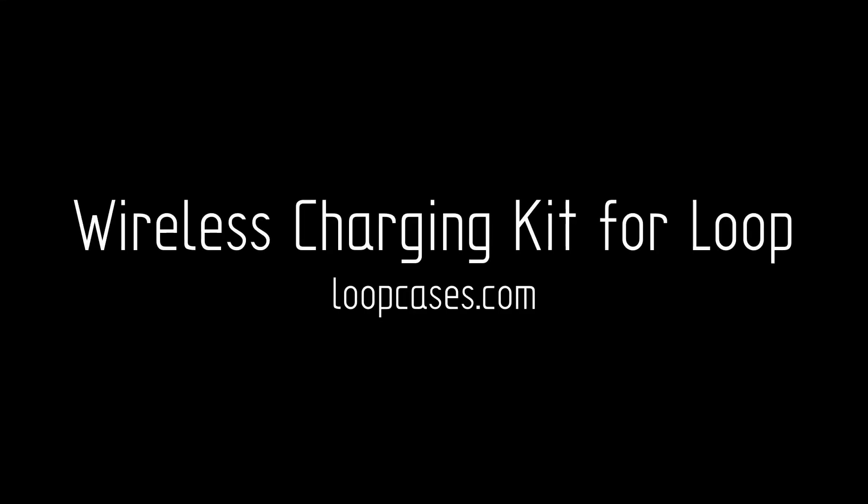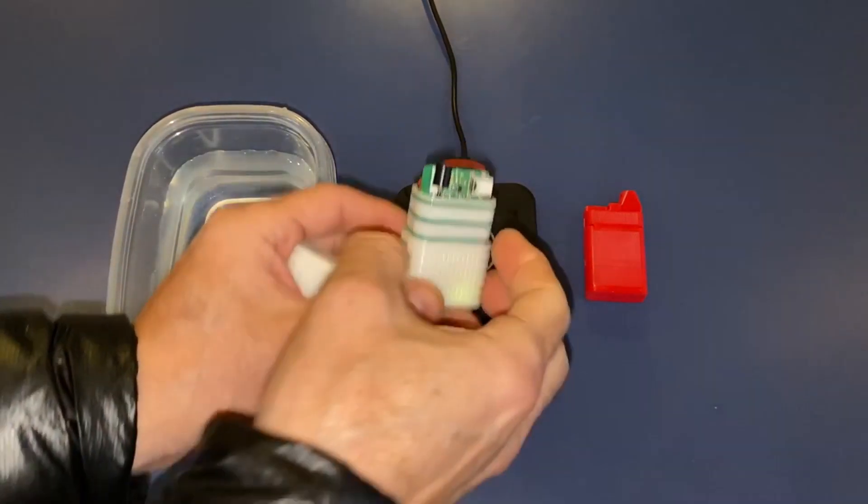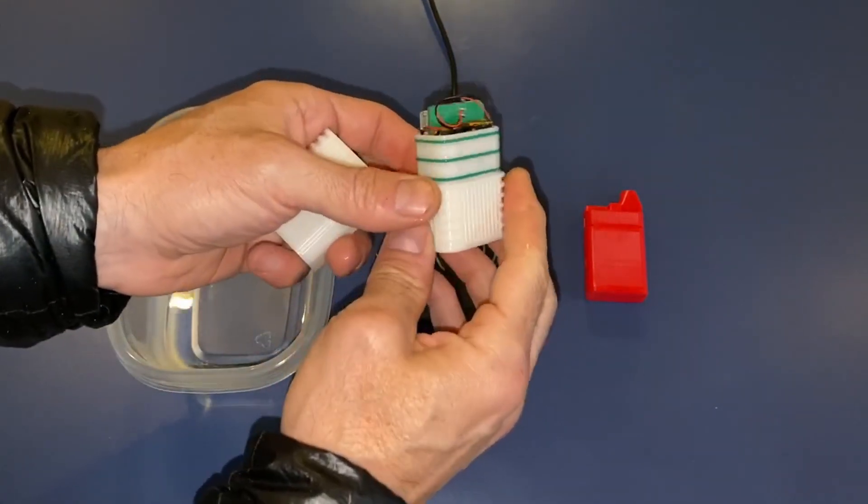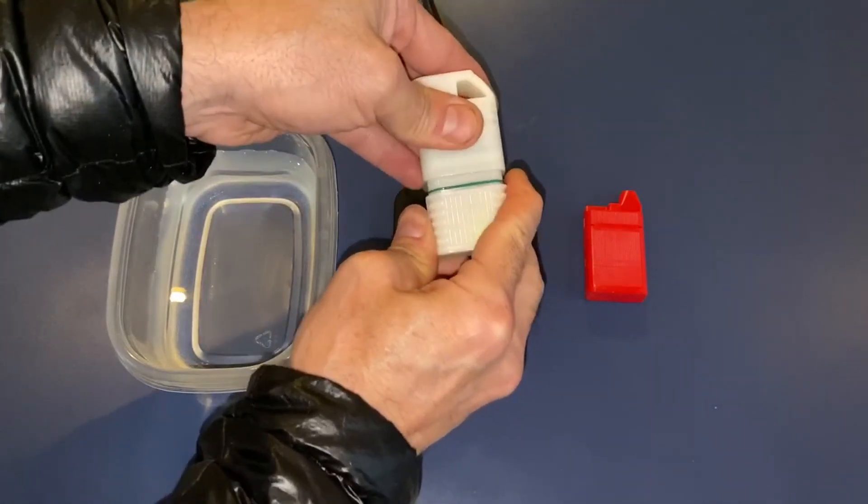This is a wireless upgrade kit for Loop. You take your electronics out of the normal enclosure and put it into this triple O-ring sealed one, along with a charging coil that's provided in the kit. You then snap it together.